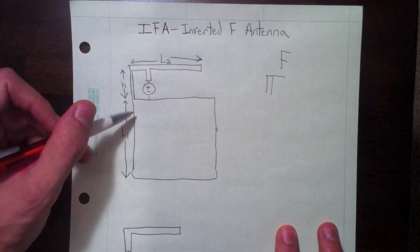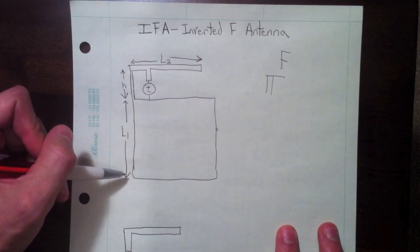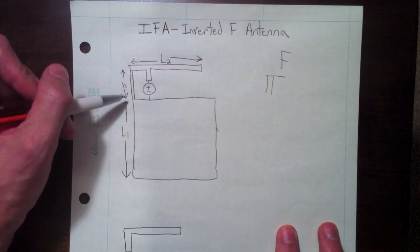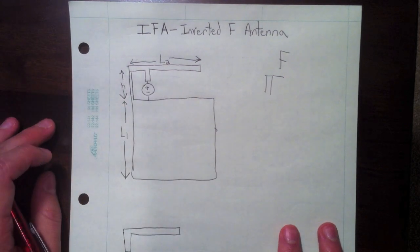The dimensions here: this ground plane is of length L1. We have a height here and then a length, total length of this arm up here L2.